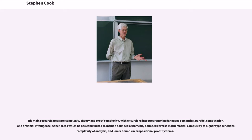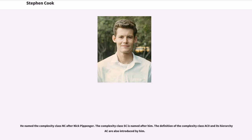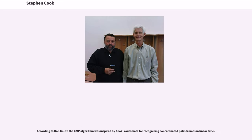His main research areas are complexity theory and proof complexity, with excursions into programming language semantics, parallel computation, and artificial intelligence. Other areas which he has contributed to include bounded arithmetic, bounded reverse mathematics, complexity of higher type functions, complexity of analysis, and lower bounds in propositional proof systems. He named the complexity class NC after Nick Pippenger. The complexity class SC is named after him. The definition of the complexity class AC0 and its hierarchy are also introduced by him.